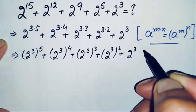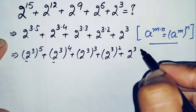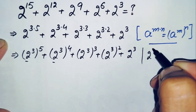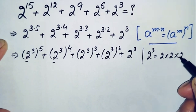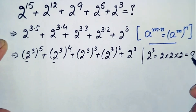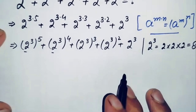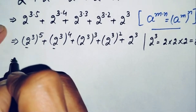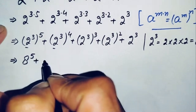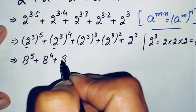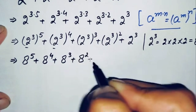Now we will find the value of 2 raised to power 3. The value of 2 raised to power 3 means we multiply 2 three times: 2 times 2 is 4, and 4 times 2 is 8. So 2 raised to power 3 equals 8. We will replace all terms of 2 raised to power 3 with 8, so the equation becomes: 8 raised to power 5 plus 8 raised to power 4 plus 8 raised to power 3 plus 8 raised to power 2 plus 8.